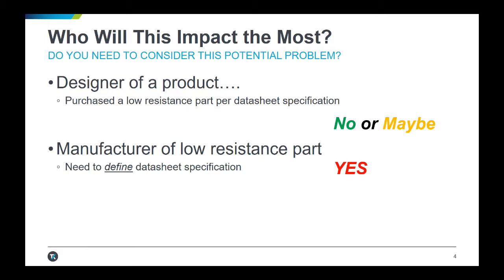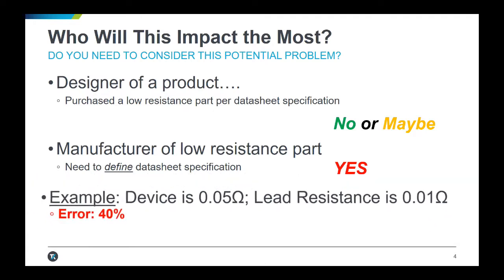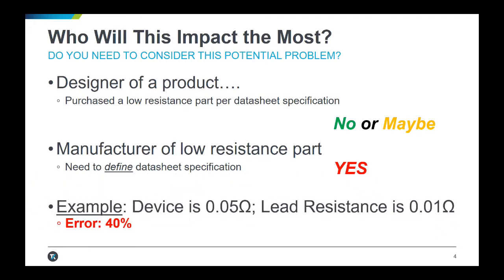Consider the situation where you are making 50 milliohm resistors and your test setup uses leads that are 10 milliohms each. This has the potential to result in 40 percent error in what you are measuring.